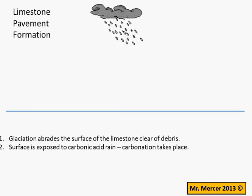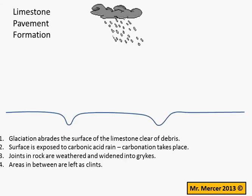The limestone is full of joints — vertical cracks within the rock caused by isostatic uplift, movements within the earth's crust. These joints are taken advantage of by the carbonation and are widened, creating a textured surface of deep crevices and flatter slabs. The joints are widened into what we call grikes and the areas in between are left as what we would call clints.